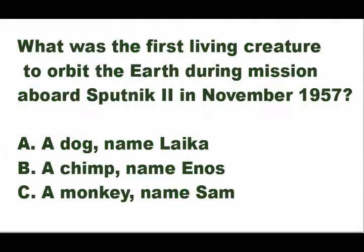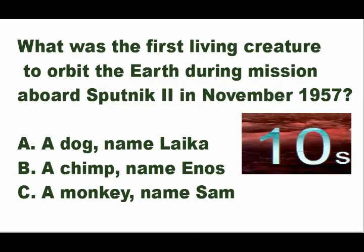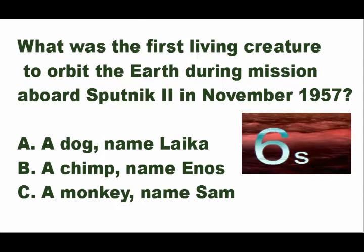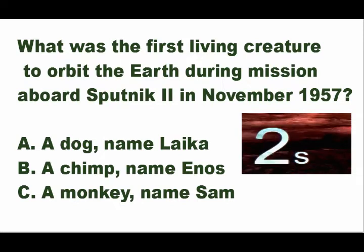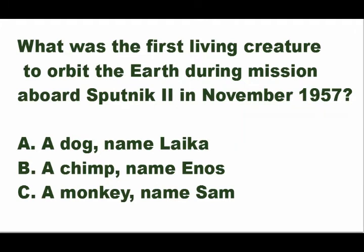Here's the first question: what was the first living creature to orbit the earth during a mission aboard Sputnik 2 in November 1957? Option A is a dog named Laika, B a chimp named Enos, C a monkey named Sam. The answer is letter A — a dog named Laika.